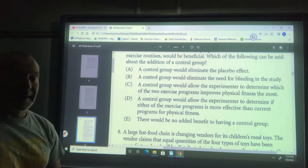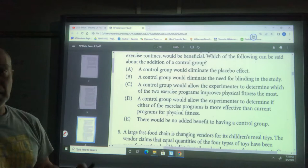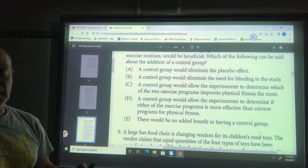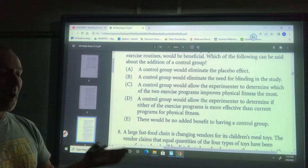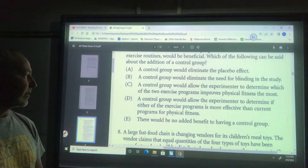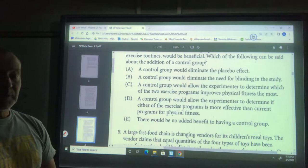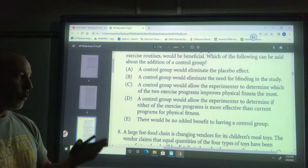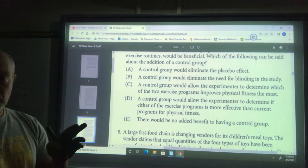A control group would not eliminate the placebo effect - there's no placebo, they're doing one exercise routine or another. A control group would not eliminate the need for blinding. A control group would not tell which of the two exercise programs improves fitness the most - comparing the two new routines together shows which one's better.